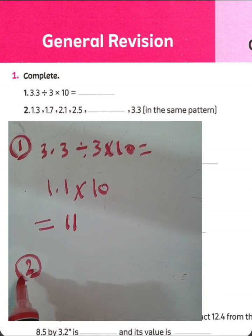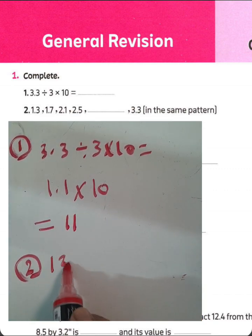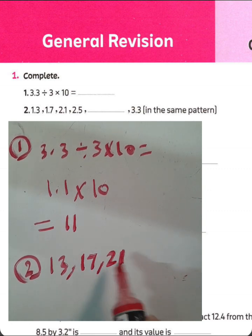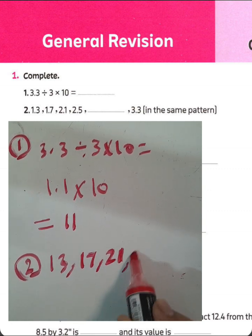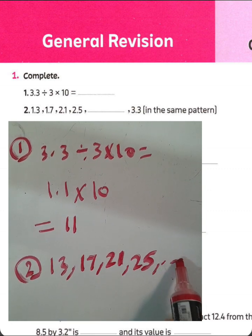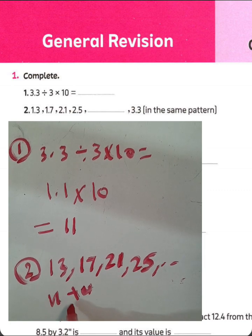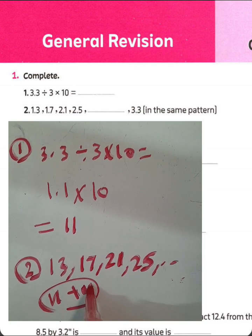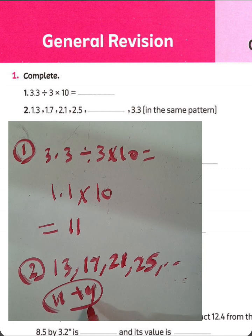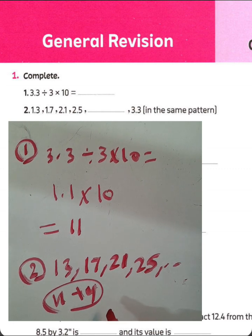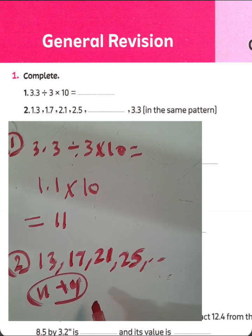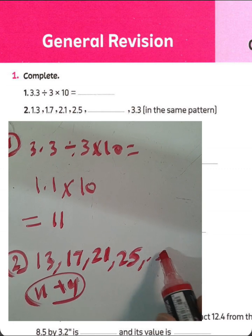What about question number 2? This pattern: 13, 17, 21, 25. The pattern rule here is plus 4. 13 plus 4 equals 17, 17 plus 4 equals 21, 21 plus 4 equals 25, and 25 plus 4 equals 29.